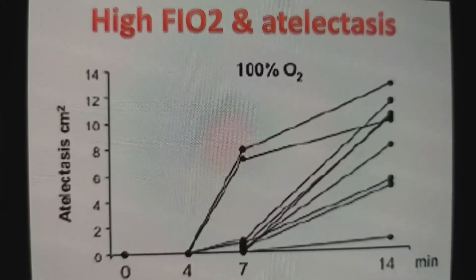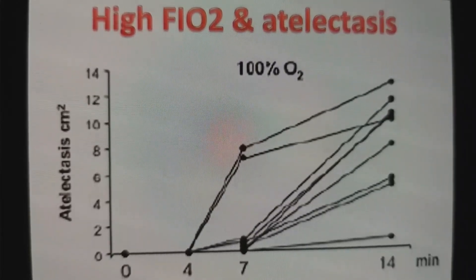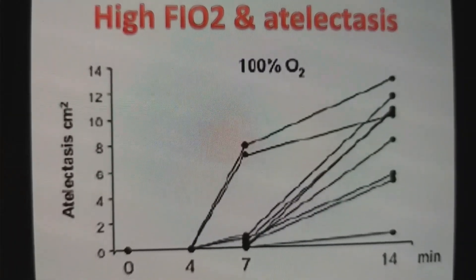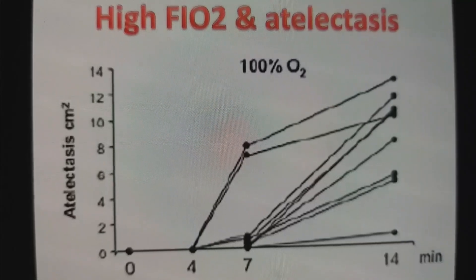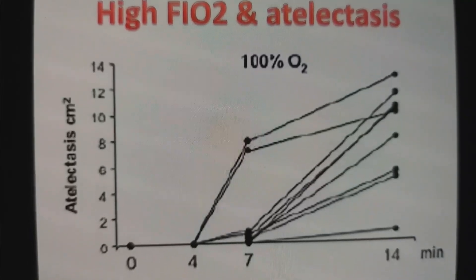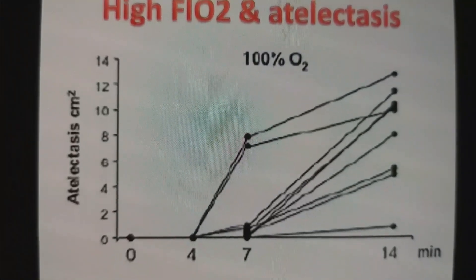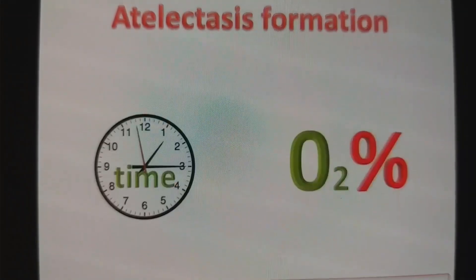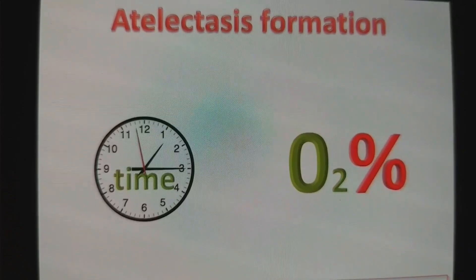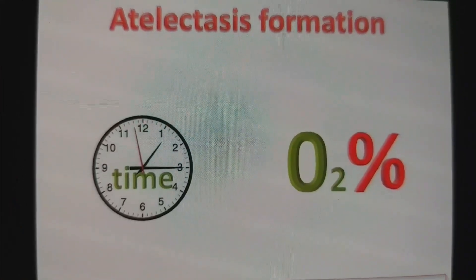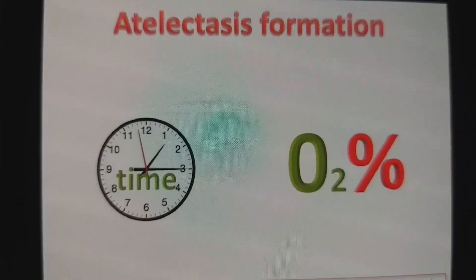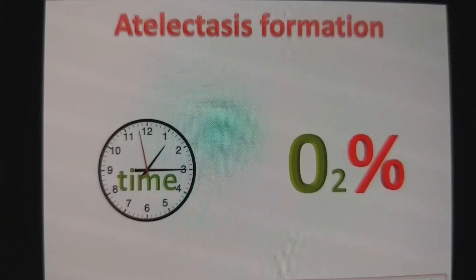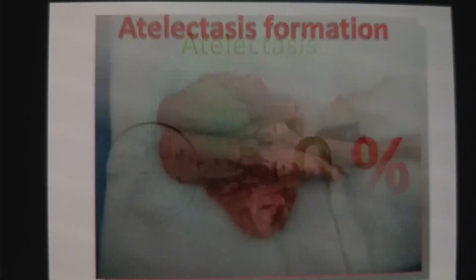To put that in perspective — looking at a mobile phone, it is almost 12 cm square. That would be the size of the atelectasis area. So the amount of atelectasis depends on how long and how high an FiO2 is used.